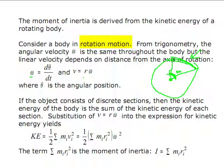Now if you have many discrete sections, you could add up the kinetic energy for this body. It would be the sum of the kinetic energy of each section. Kinetic energy is one-half summing up mass times velocity squared. But we know that velocity in this case is radius times omega.